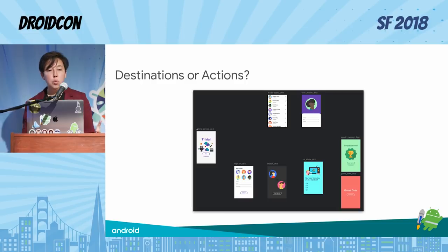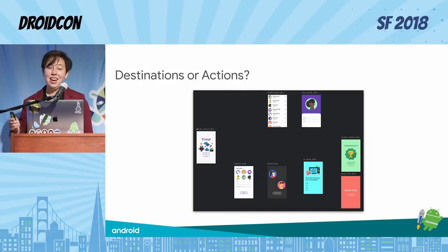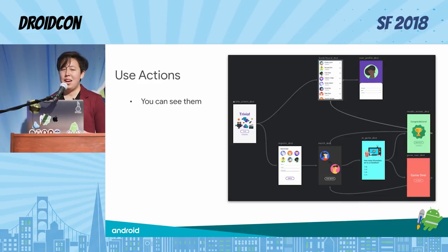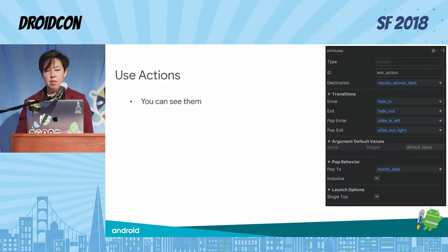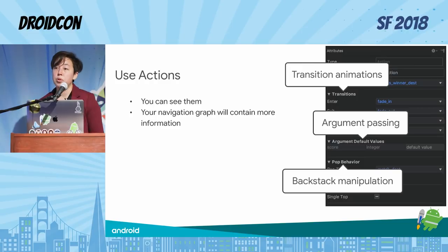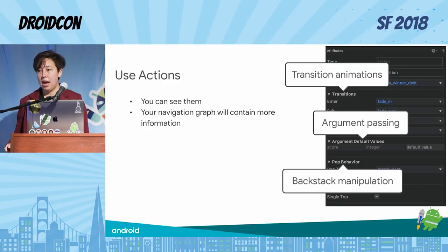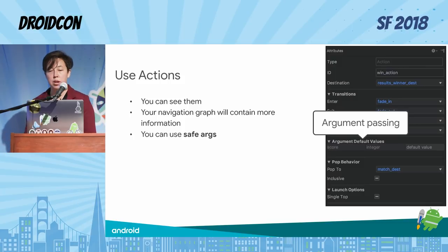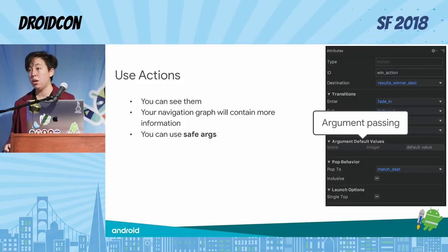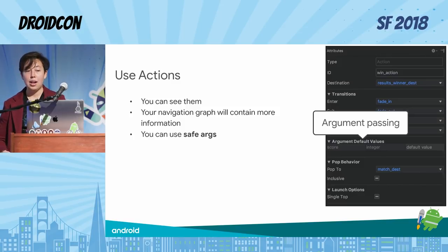The next question is: should you be using destinations or actions? We highly encourage you to use actions in your nav graph because those arrows embed a lot more information — including what transition should occur, what arguments should be passed, and any back stack manipulation. This brings in the concept of SafeArgs, the plugin I talked about before. You should be using actions, and for your navigating you should actually be using the SafeArgs plugin because it ensures type safety.